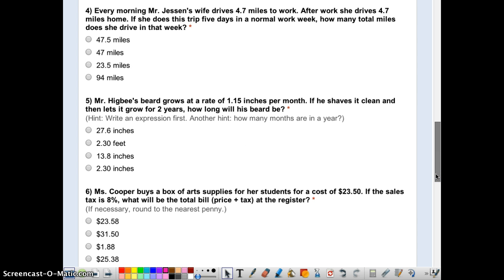Next one. Every morning, Mr. Justin's wife drives 4.7 miles to work. After work she drives 4.7 miles home. She does this trip five days in her normal work week. How many total miles is she driving that week? So you got to think, she is going from our house to her school, which is 4.7 miles, and she comes back 4.7 miles more. So I need to add those two together, and you should end up getting 9.4.